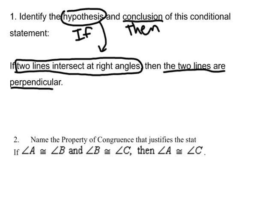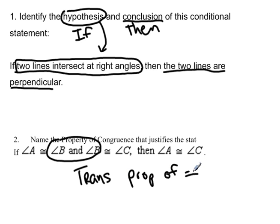Alright, number two says name the property of congruence that justifies the statement. First of all, we're told that if angle A is congruent to angle B and angle B is congruent to angle C, then how would we know that angle A is congruent to angle C? Notice that we go from this to this one, and what have we lost? We have lost B, so that goes away. So how do we skip from one to the end? That is the transitive property of congruence.